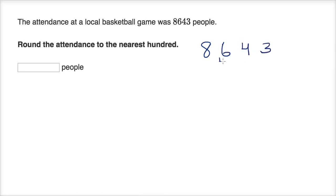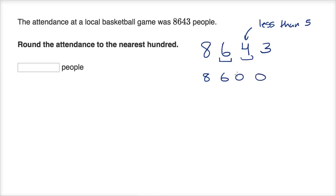We want to round to the nearest 100, so we go one place to the right of that and ask: is this less than five or greater than or equal to five? Since it is less than five, we round down to 8,600. We have rounded to the nearest 100: 8,600 people.